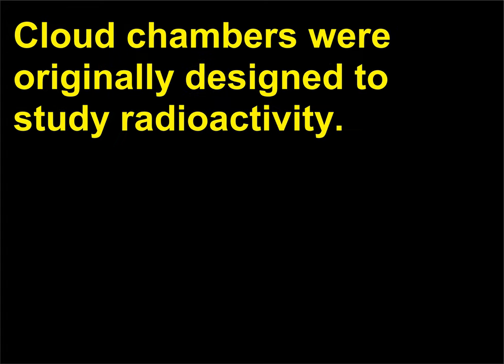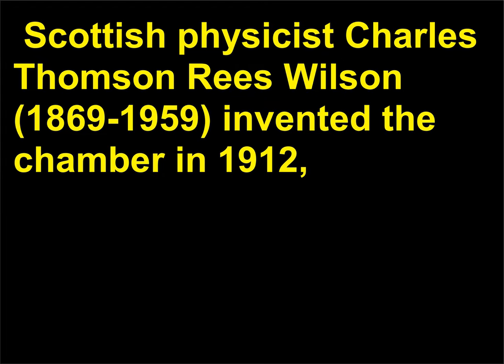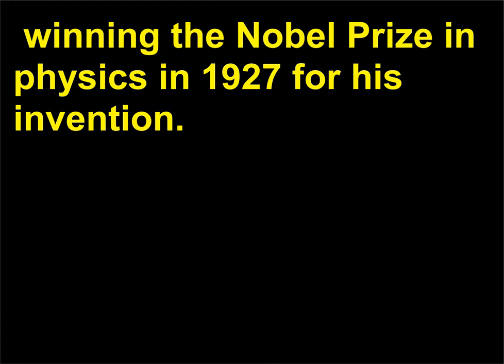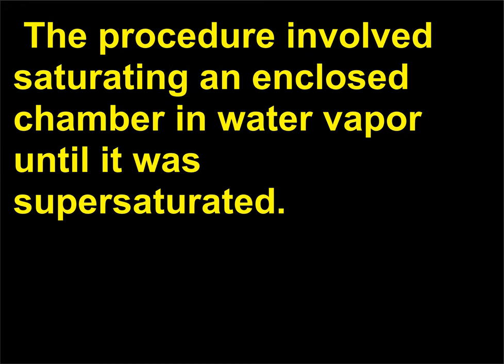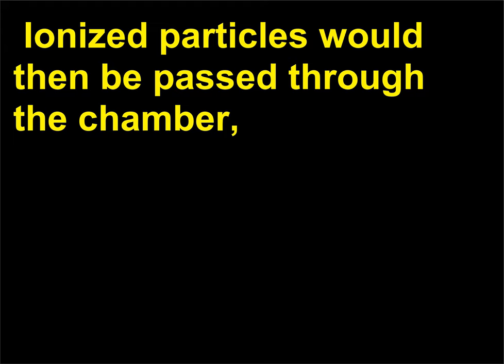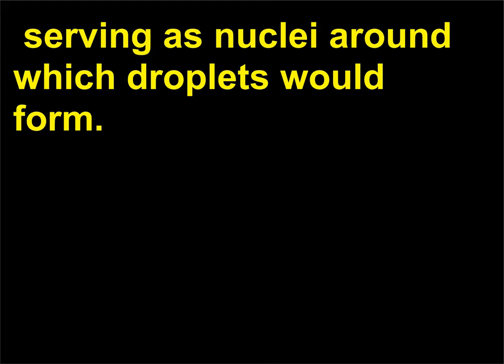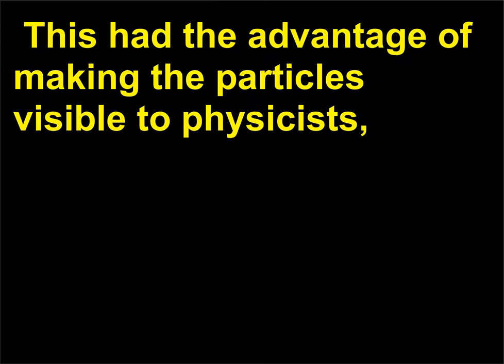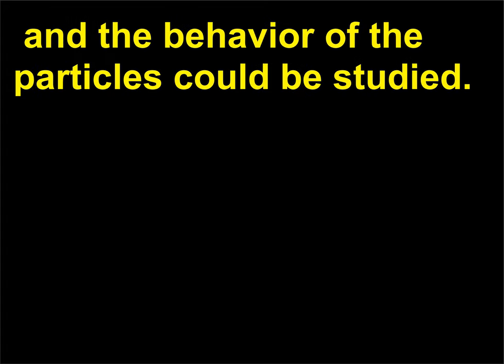What is a cloud chamber? Cloud chambers were originally designed to study radioactivity. Scottish physicist Charles Thomson Rees Wilson (1869–1959) invented the chamber in 1912, winning the Nobel Prize in physics in 1927 for his invention. The procedure involved saturating an enclosed chamber with water vapor until it was supersaturated. Ionized particles would then be passed through the chamber, serving as nuclei around which droplets would form, making the particles visible to physicists so their behavior could be studied.